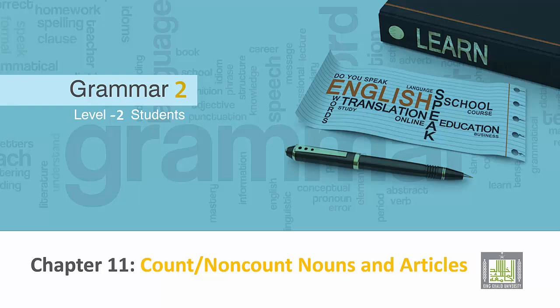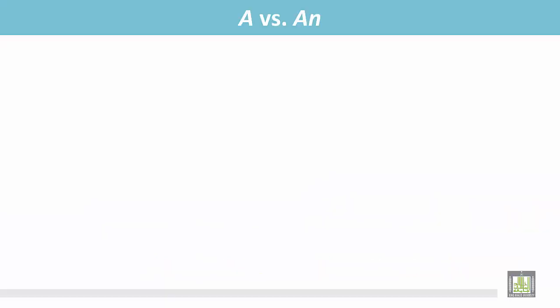Grammar 2 for Level 2 students, Chapter 11: Count or Non-count Nouns and Articles. A vs AN — Use of A.